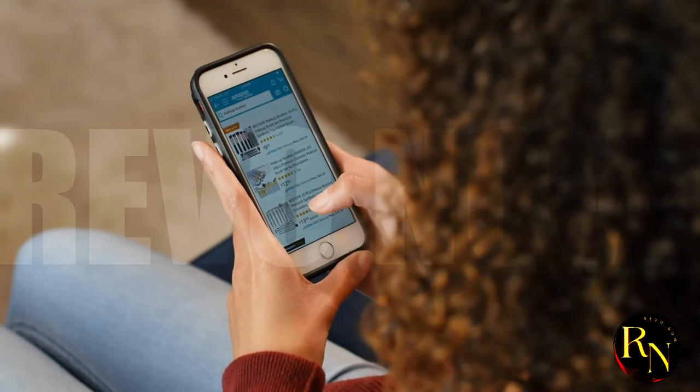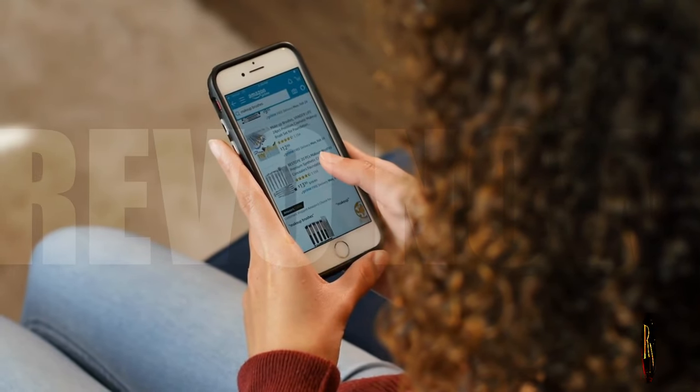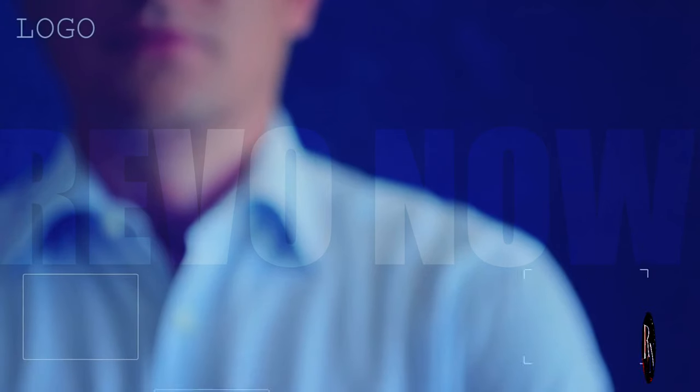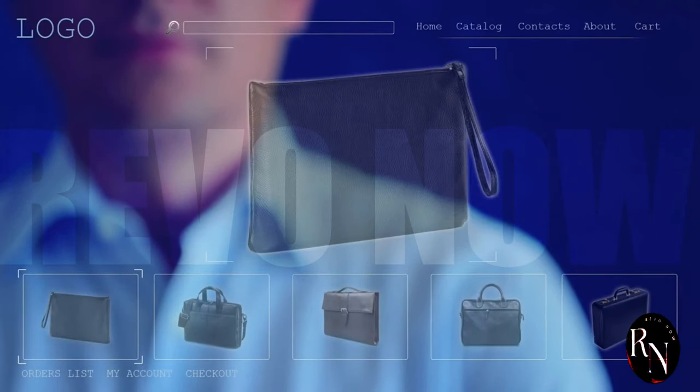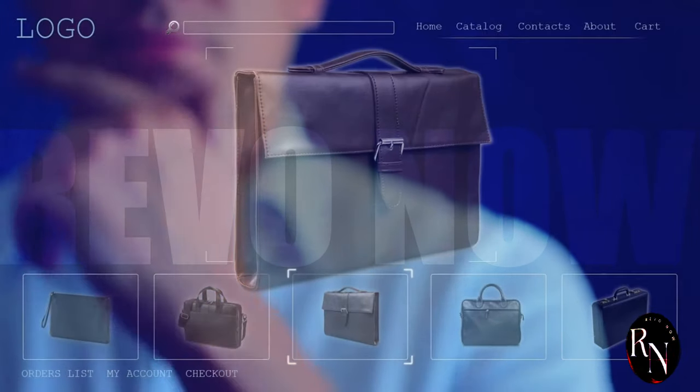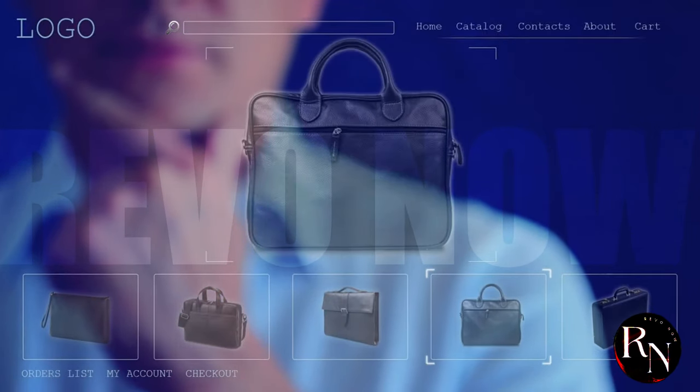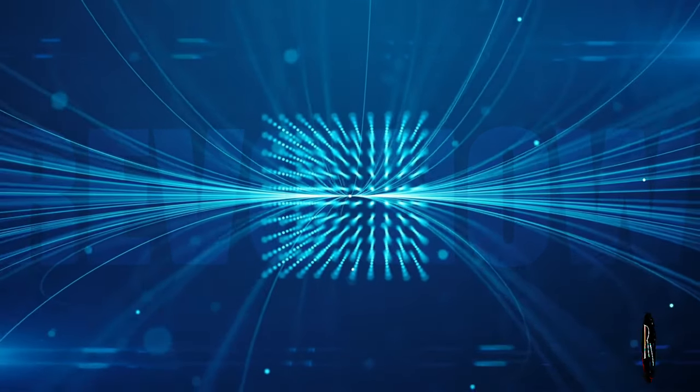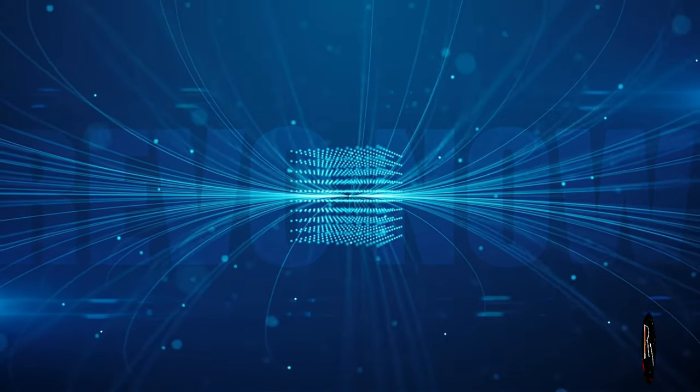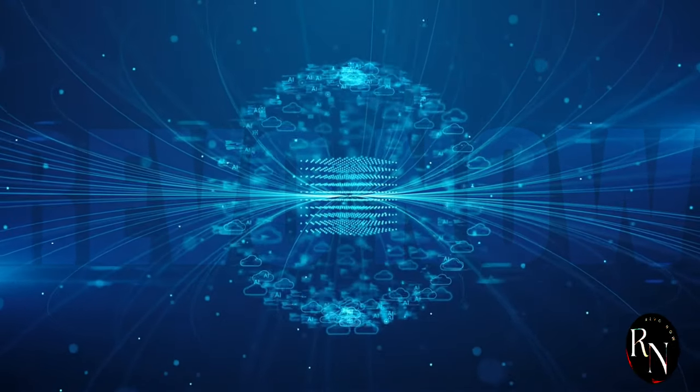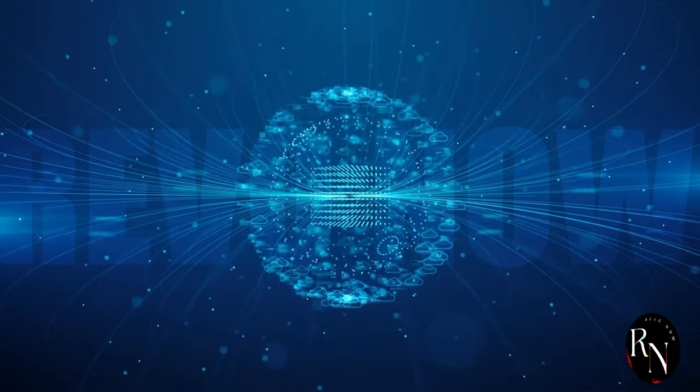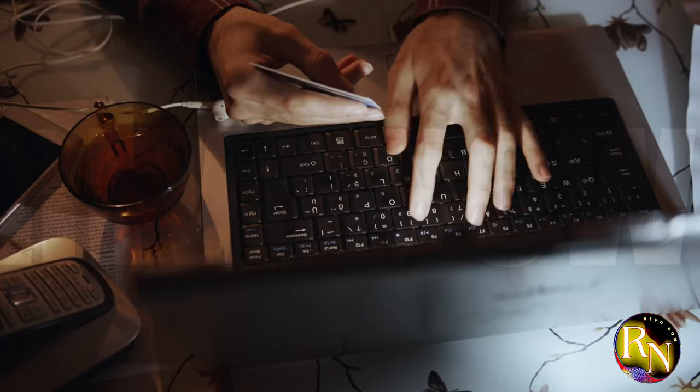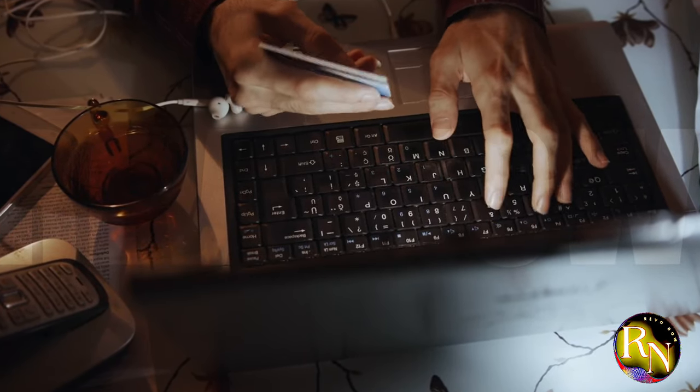Alibaba, with its vast online marketplaces like Taobao and AliExpress, is already putting the chip to work, revolutionizing the way consumers shop online. Imagine a world where your online shopping experience is tailored to your every whim, where the platform anticipates your needs before you even type them in. That's the power of the Hanguang 800. It enables Alibaba to personalize product recommendations, optimize logistics and supply chain management, and even enhance customer service through AI-powered chatbots. The Hanguang 800 is not just changing the game, it's rewriting the rulebook for the entire e-commerce industry.